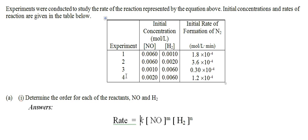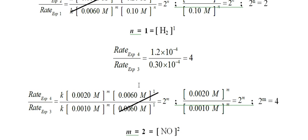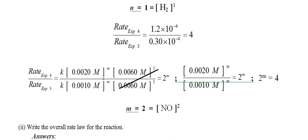Then I compared experiment 3 to experiment 4. This gave me matching concentrations for hydrogen, whose order I already know, so I can find the order for NO. I get 2^M times 2^M equals 4, so M equals 2 — NO is second order. Remember: for a reactant, it can only have an order of 0, 1, or 2. The reaction order can be higher — it's the sum of all reactant orders — but individual reactants are 0, 1, or 2.